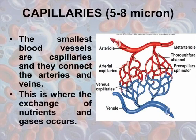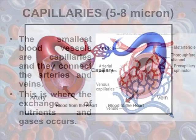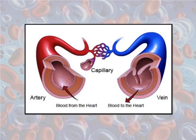This is where the exchange of nutrients and gases occurs. Arteries carry blood away from the heart and veins carry blood back to the heart. When an artery reaches an organ it branches out into capillaries, where substances such as oxygen, food, and carbon dioxide are exchanged between the blood and organ cells. The capillaries then join up to form veins — capillaries are the links between arteries and veins.